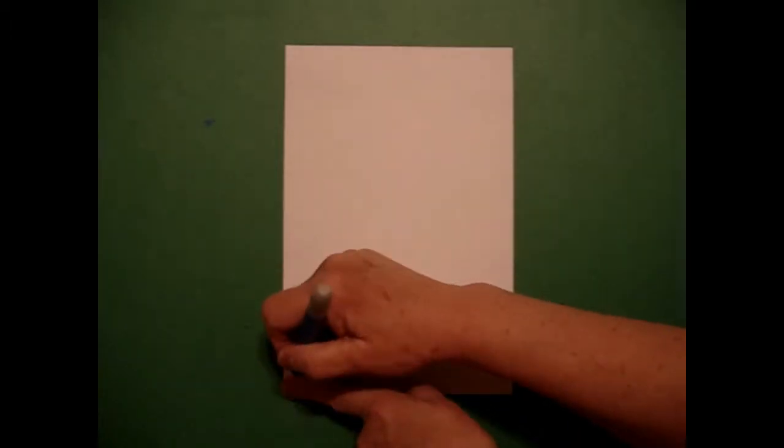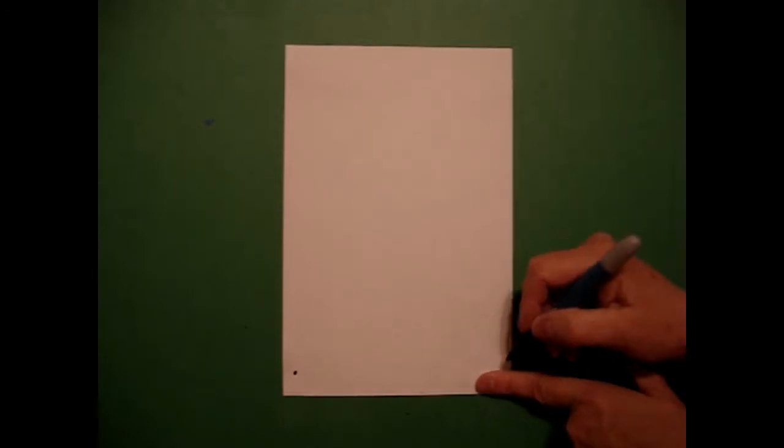I'm going to take one finger on the left and put a dot at the bottom and one finger on the right and put another dot at the bottom. I go back to the left and I'm going to draw a slightly wavy line all the way across.